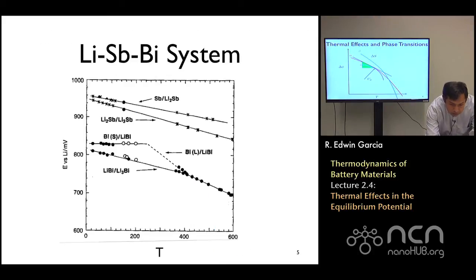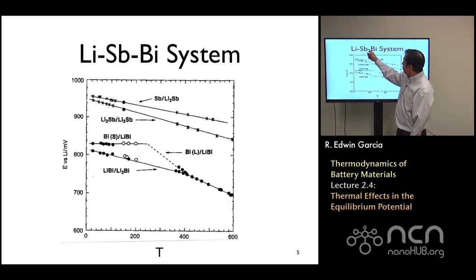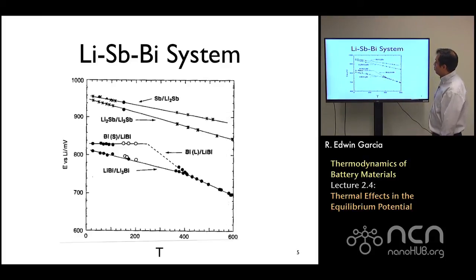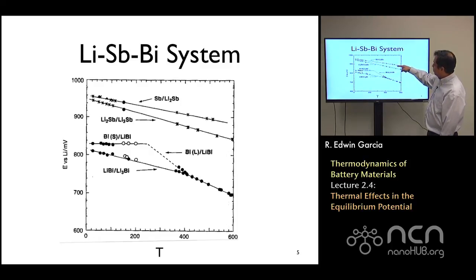Here's a couple of examples just to show you the type of description. What you see here is for the lithium-antimony-bismuth system. You have the voltage as a function of temperature, and what you have here is the antimony, lithium-2 antimony system. You can see how the voltage is decreasing as the temperature increases.